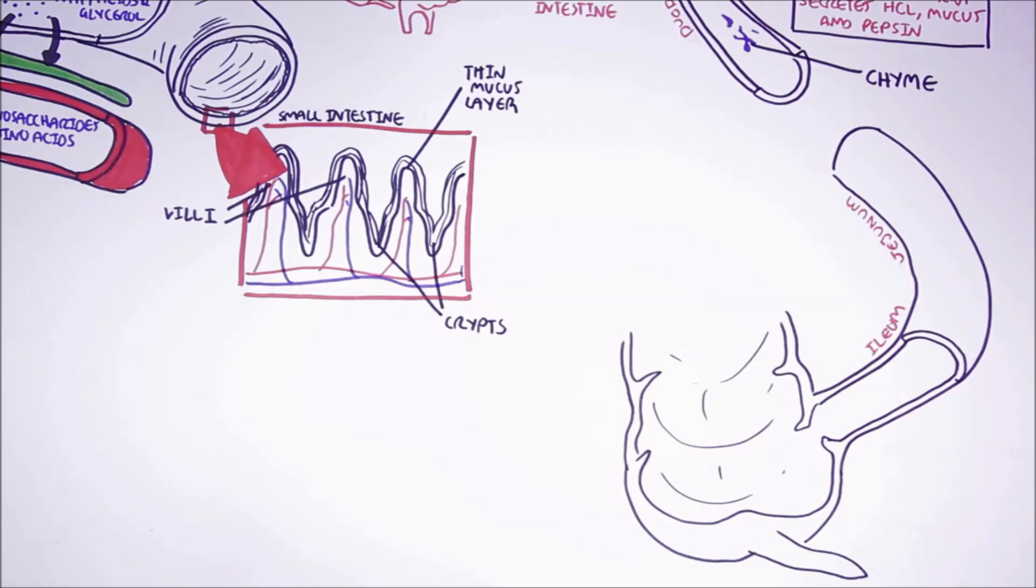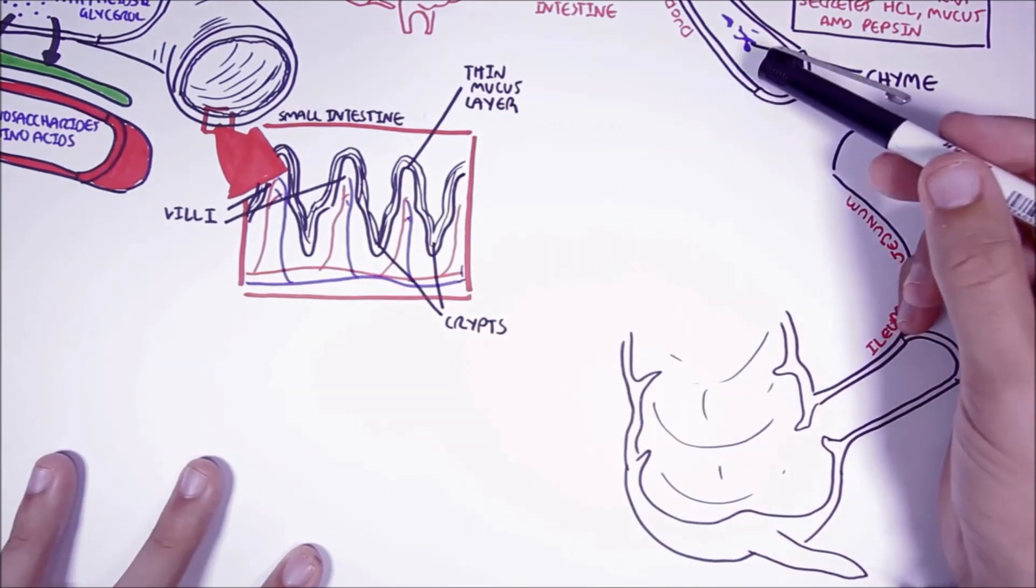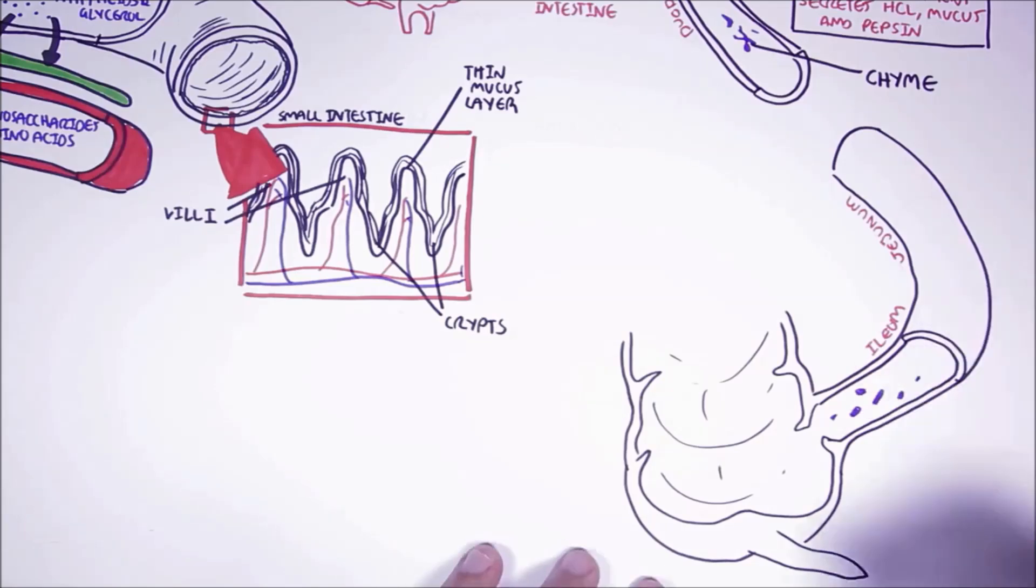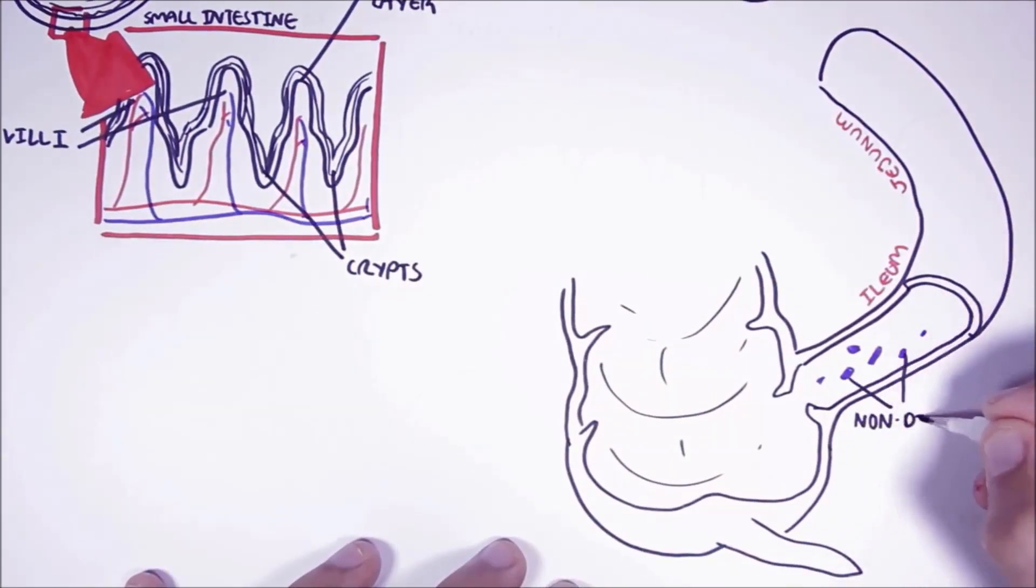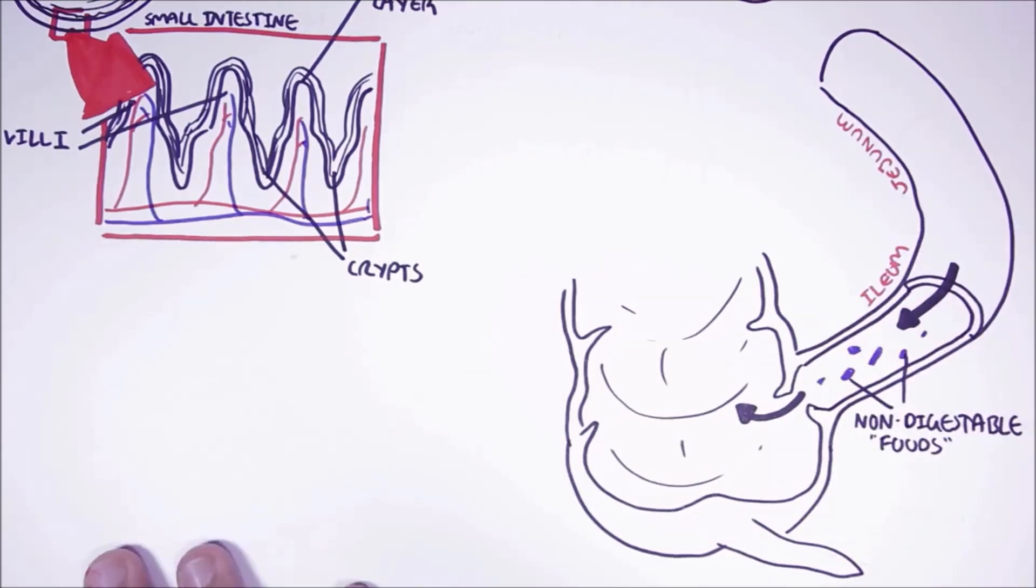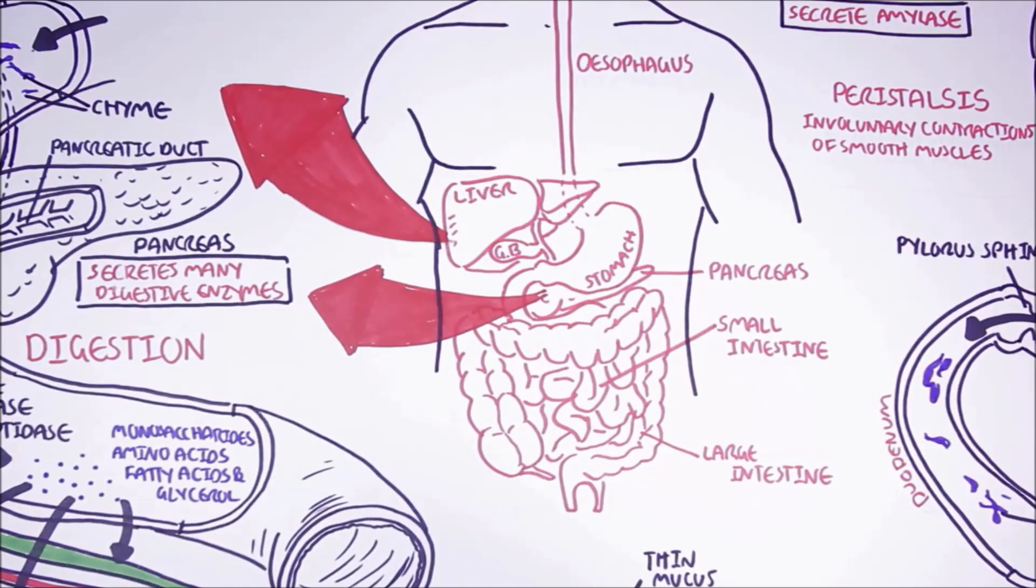Foods that are not digested and absorbed in the small intestine will reach the colon. We will soon see what will happen to these non-digestible foods. But first we need to learn a bit more about the anatomy of the large intestine.